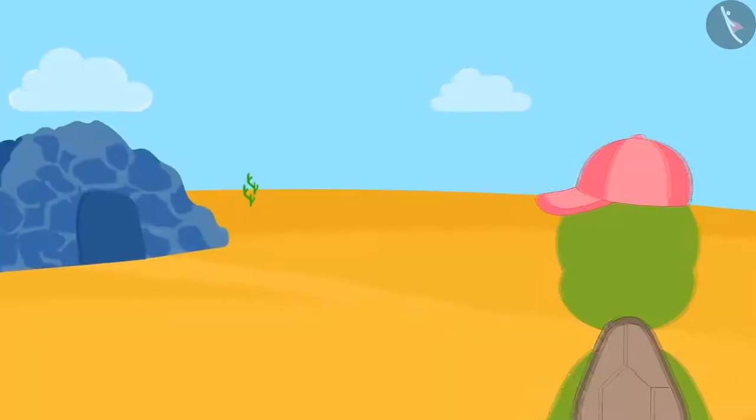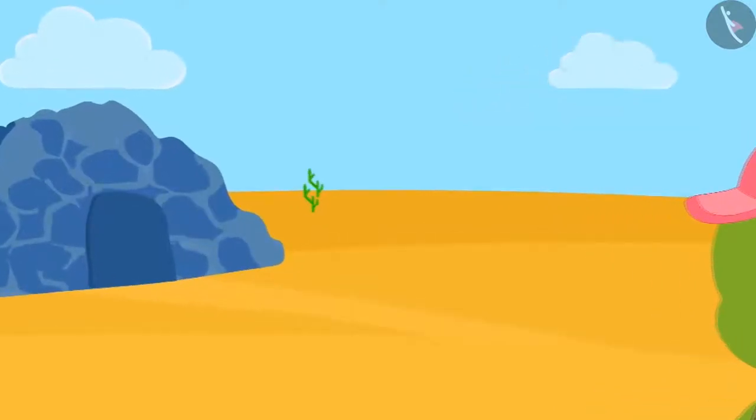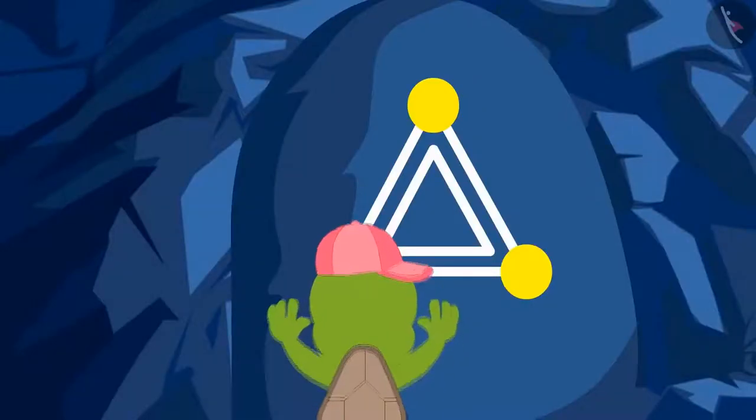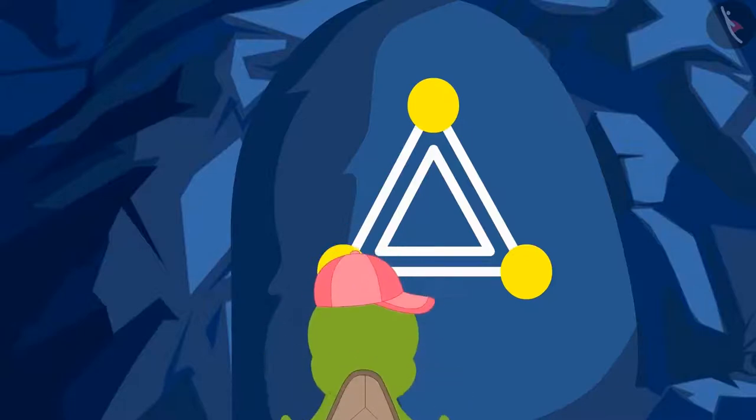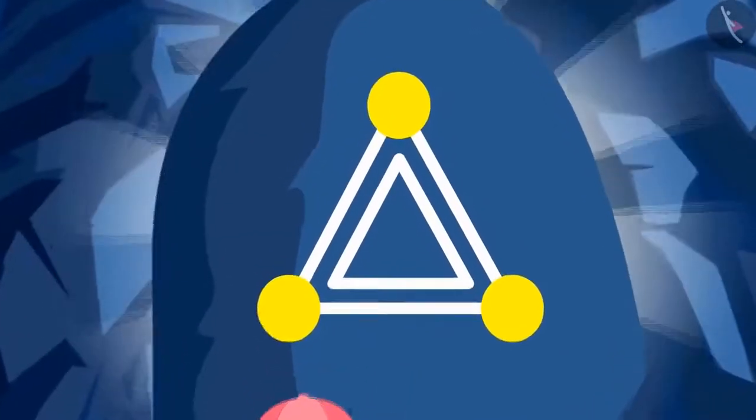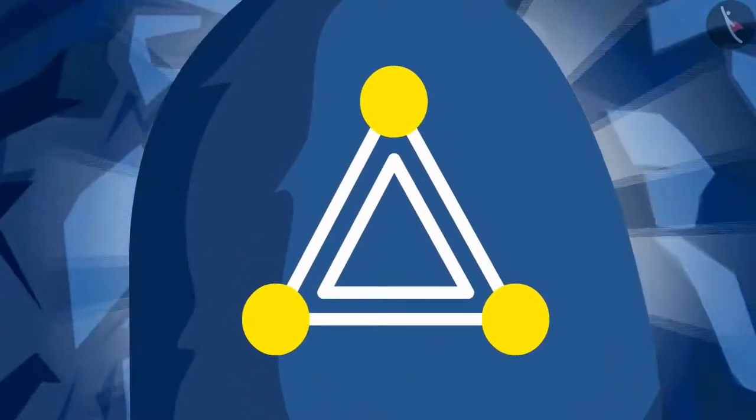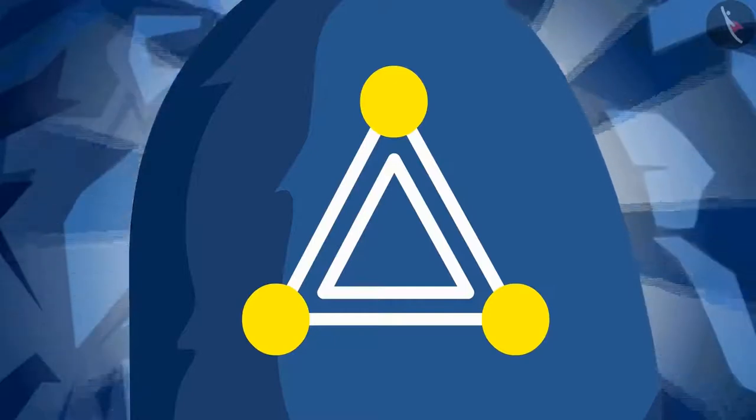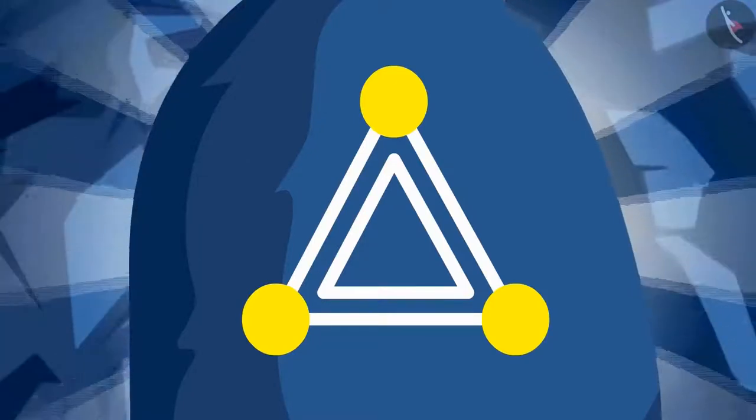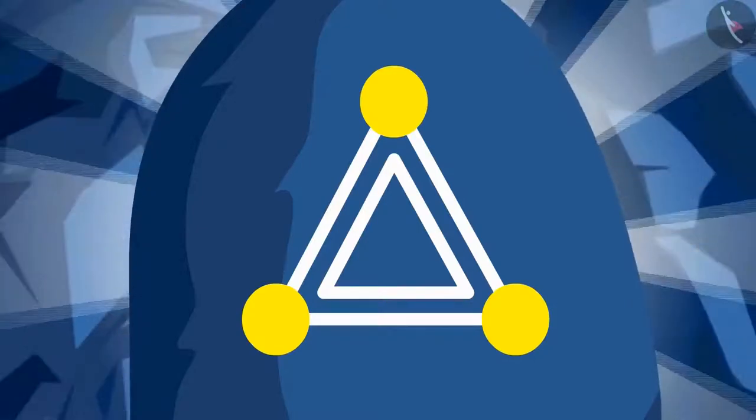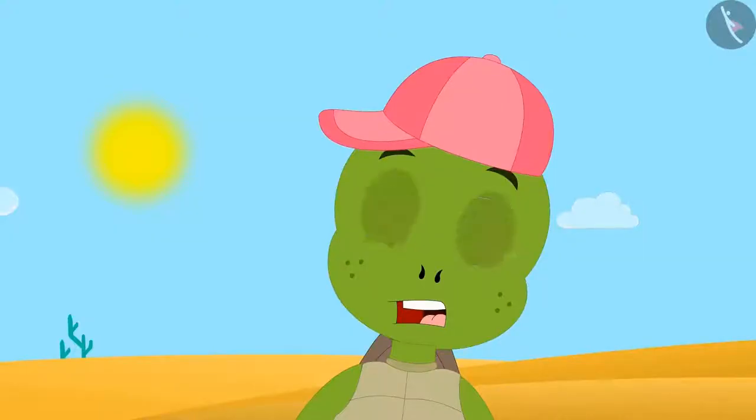One day, Tufan the turtle saw a cave. As Tufan tried to open the door, a voice came from inside. If you want to find the treasure hidden in the cave, you have to open three doors. There is a puzzle on each door. When you find the right answer to the puzzle, that door will open.